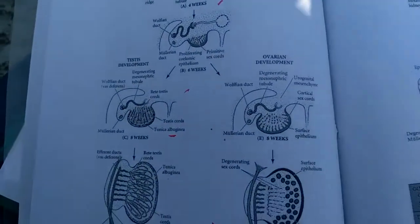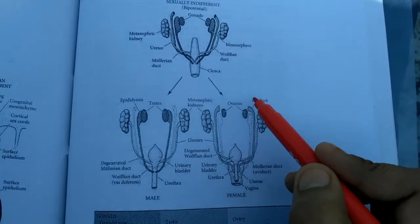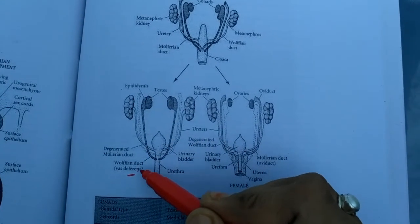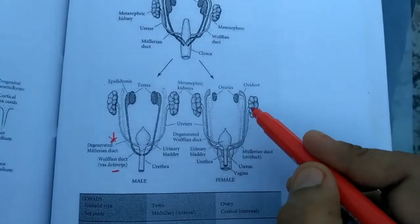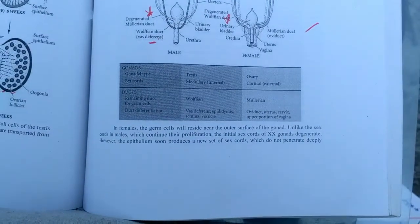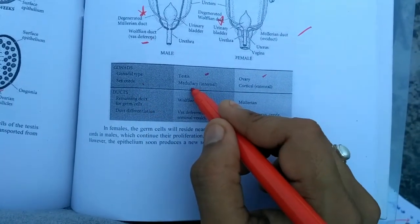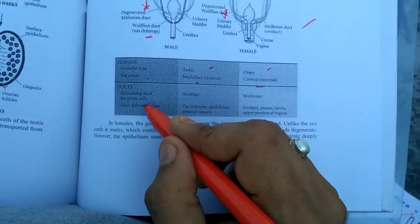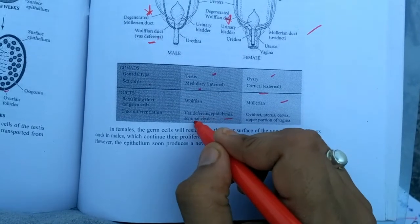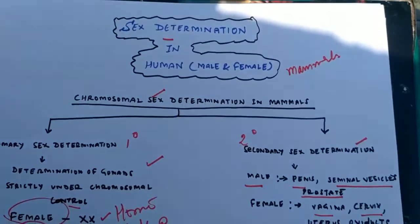Here is the formation of external genitalia. Starting from a bi-potential gonad in early stages, male and female development diverge. In males, testes form, the Wolffian duct becomes the vas deferens, and the Müllerian duct degenerates. In females, ovaries and oviducts form from the Müllerian duct, and the Wolffian duct degenerates. The remaining germ cells and ducts include: in males — epididymis, seminal vesicle; in females — oviduct, uterus, cervical canal, and upper vagina.